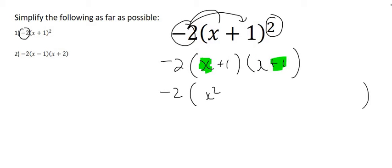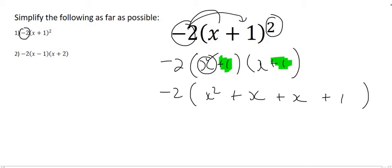And then we'll multiply the x with the positive 1 which is just positive x. So now that we've used this x over here, we now need to use this positive 1. And so we'll start by multiplying it with this x over here. And so positive 1 times by x is x and positive 1 times positive 1 is plus 1.